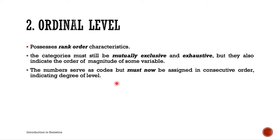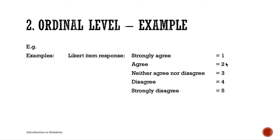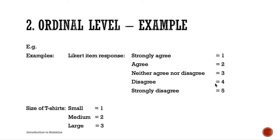In the ordinal scale, consecutive order indicates degree or level — for example, from lowest to highest or most preferred to least preferred. A classic example is the Likert item response scale: strongly agree, agree, neither agree nor disagree, disagree, strongly disagree. Another example is t-shirt sizes: small is 1, medium is 2, large is 3.